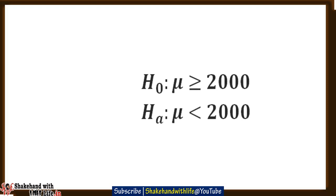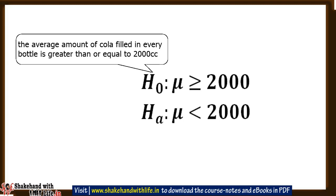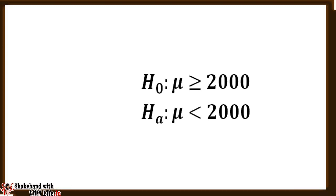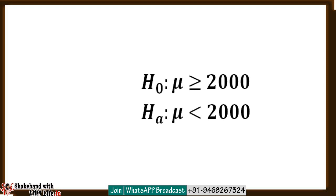Let's solve this problem. First, we state the null and alternative hypothesis. The null hypothesis is: H-naught: mu is greater than or equal to 2000, meaning the average amount of cola filled in every bottle is greater than or equal to 2000 cc. The alternative hypothesis is: HA: mu is less than 2000, meaning the average amount of cola filled in every bottle is less than 2000 cc. Since HA is one-sided and less-than type, we will use the left-tail test.